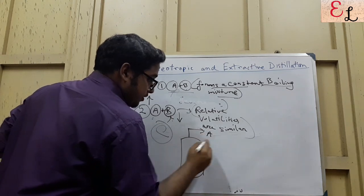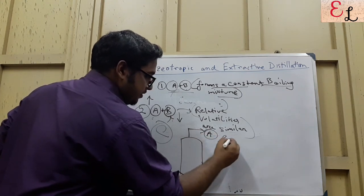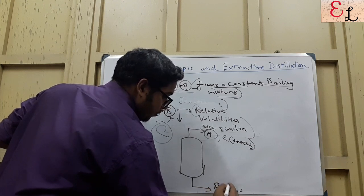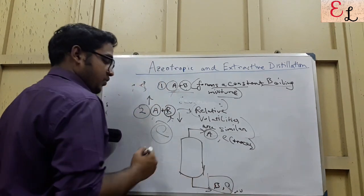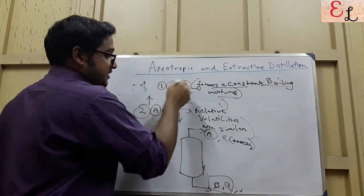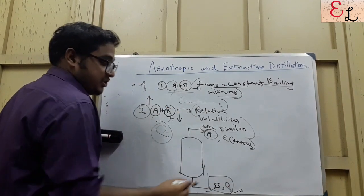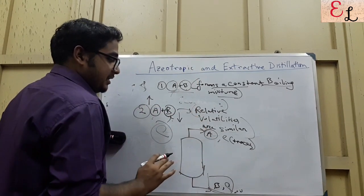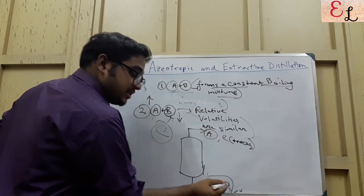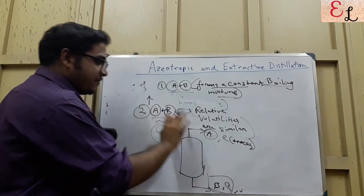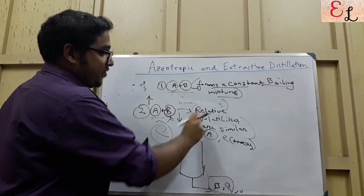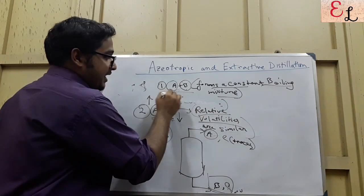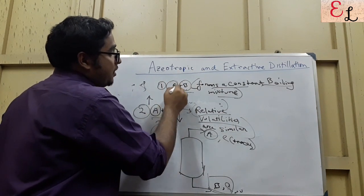From the top we obtain mainly A with traces of C, and from the bottoms we get mainly B with some amount of C associated with it. It is not B plus C forming an azeotropic mixture, so the separation of B and C is much easier than separating A and C in azeotropic distillation. Here C didn't form an azeotrope with A or B — it just changed their volatilities: decreased B's volatility and increased A's volatility so that A forms vapors and C remains as liquid.